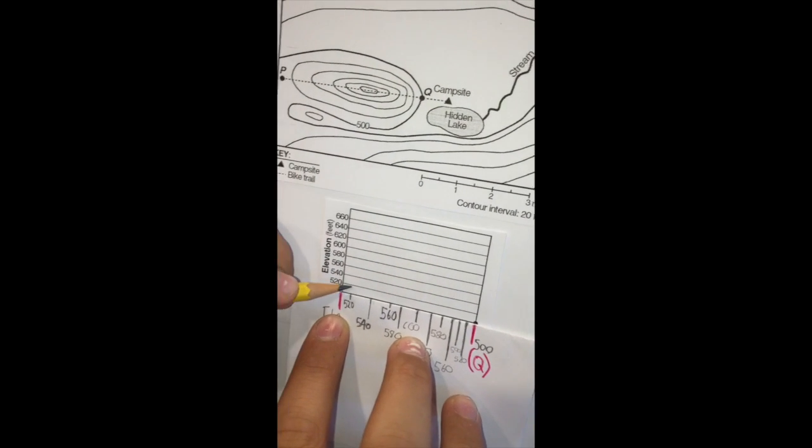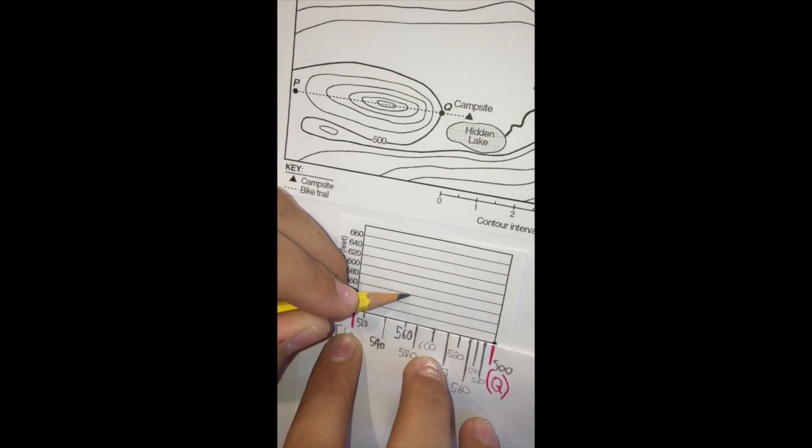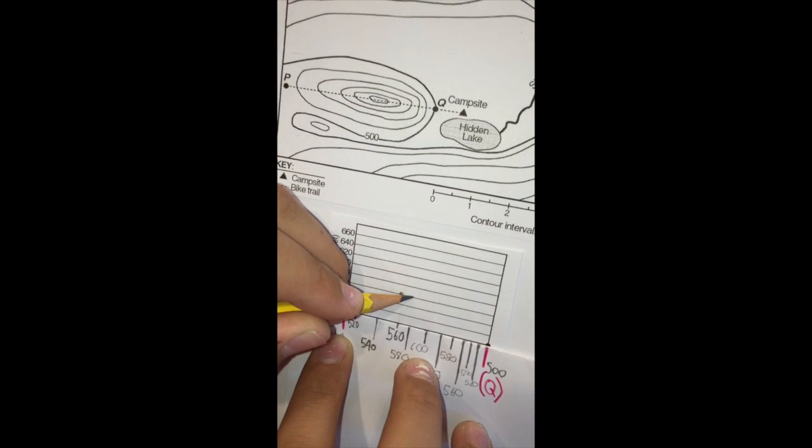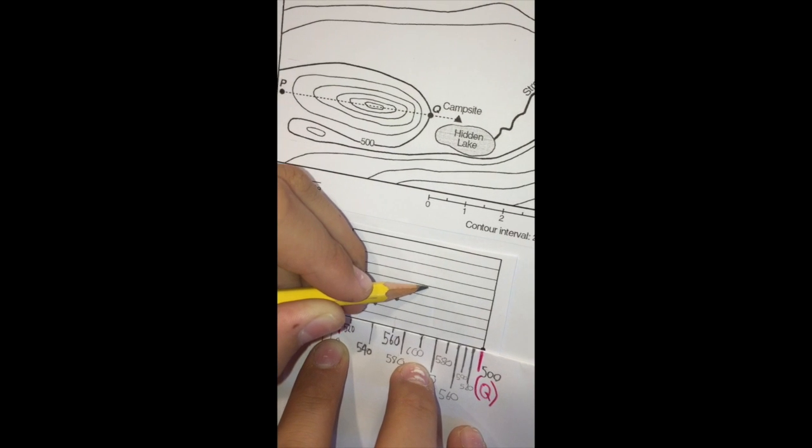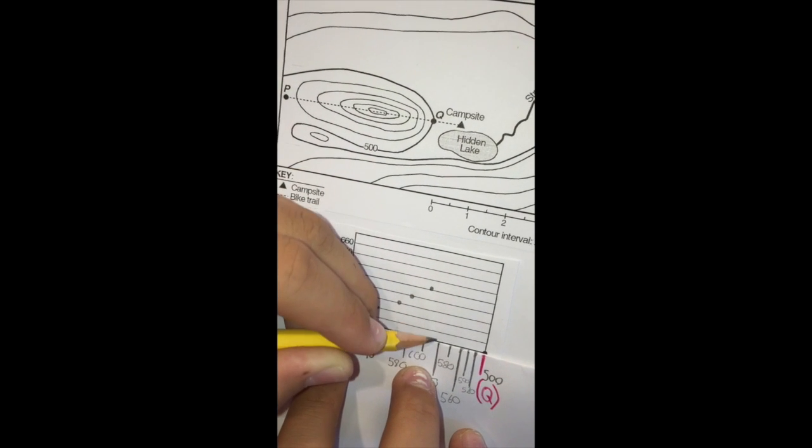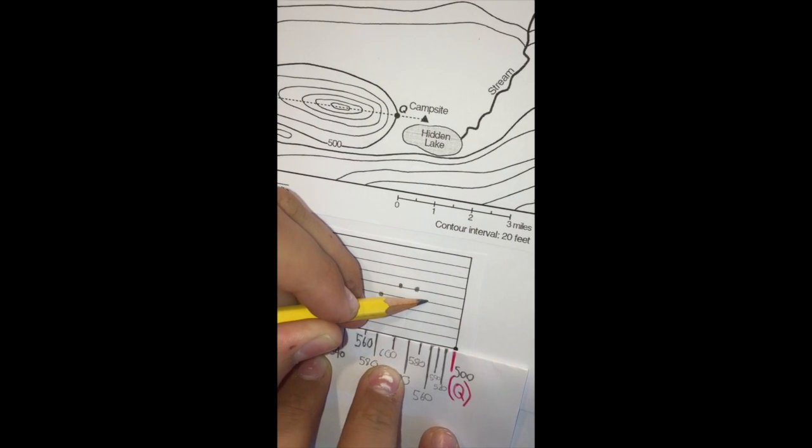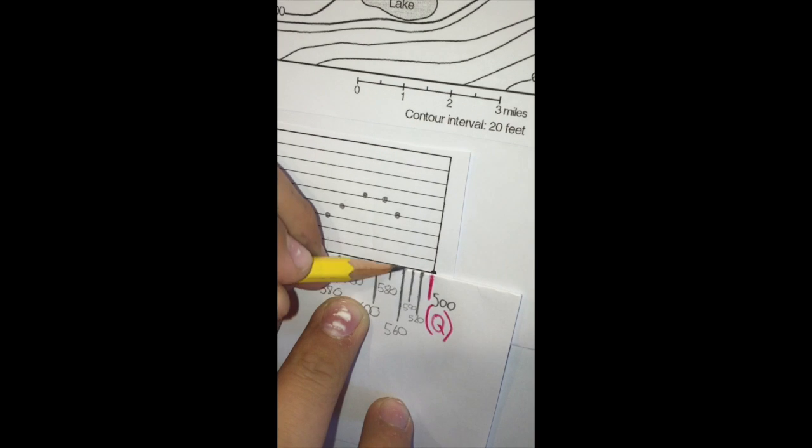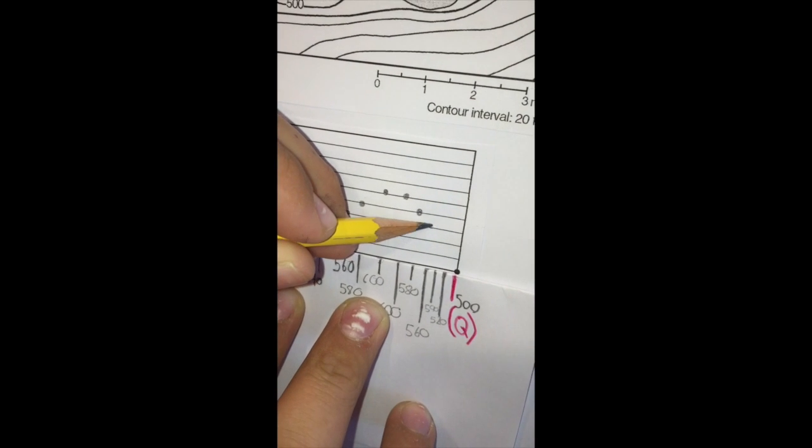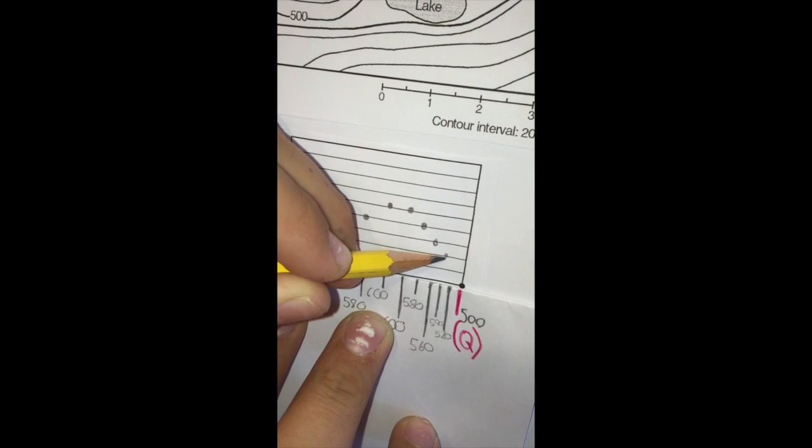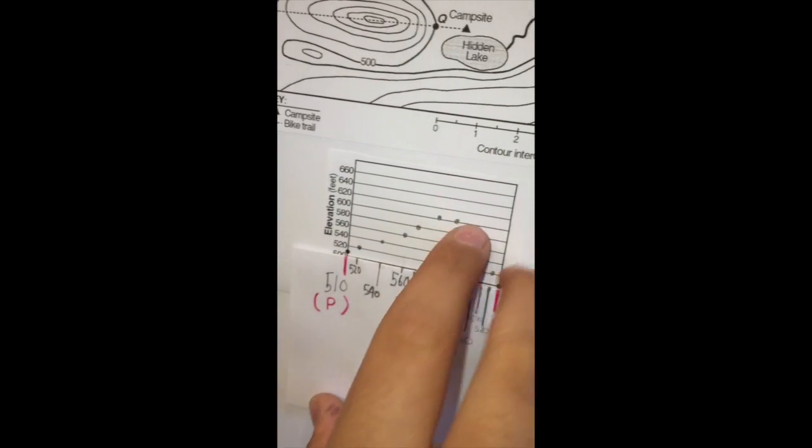So, 520, 540, 540, 560, 580, 600, 600 again, 580, 560, 540, 540, 520, and finally 500, which is already plotted for you.